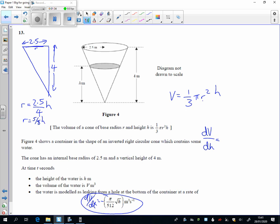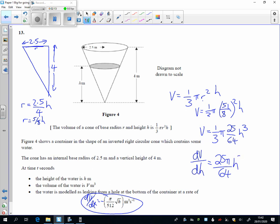That needs to go in here, so I've got volume equals one third pi times by 25 over 64 h cubed. And now I can differentiate this: dV/dh is times by 3, so that's going to cancel out the third, giving 25 pi over 64 h squared.